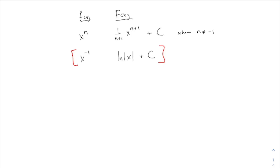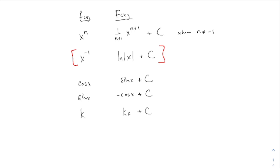The other important rules are about the trig functions. The antiderivative of cosine x is sine of x plus C. That's because the antiderivative means a function whose derivative is the first thing — the derivative of sine is cosine. The antiderivative of sine of x is minus cosine of x. You just have to keep straight those minus signs. Also, if you have just a constant, the antiderivative is kx plus C.